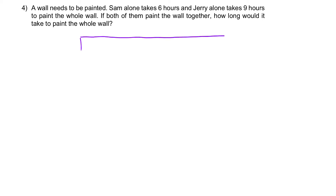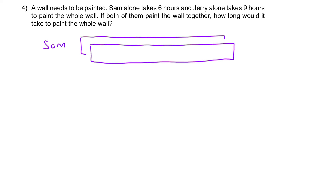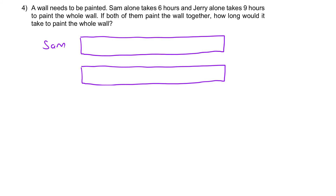Let's use a model to visualize the question. We have this wall drawn in model form — this wall for Sam, and then the same wall copied for Jerry. These are two different scenarios for the same wall. If Sam takes 6 hours, it means we partition it into 6 different parts: 1st hour, 2nd hour, 3rd, 4th, 5th, 6th hour — and then he's finished. Using this logic, Jerry divides it into 9 segments, finishing at the 9th hour.